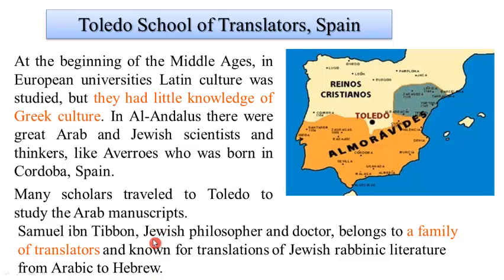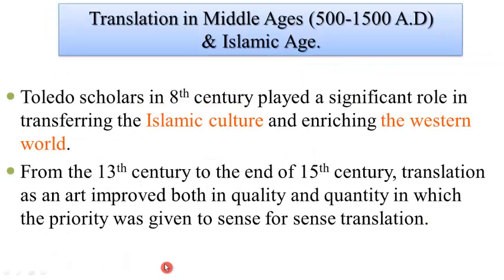Because of the development of translation, many families became professionals in the field, such as Samuel ibn Tibbon, a Jewish philosopher who belonged to a family of translators and translated Jewish literature from Arabic to Hebrew. From the 13th century to the end of the 15th century, translation witnessed improvement in quality and quantity, which enriched the Western world.